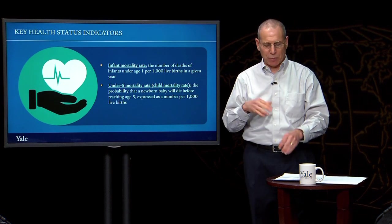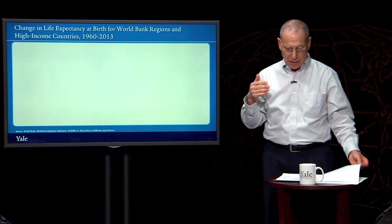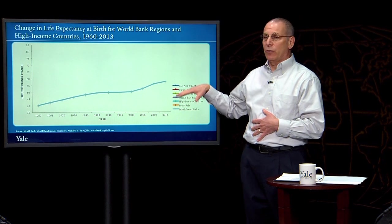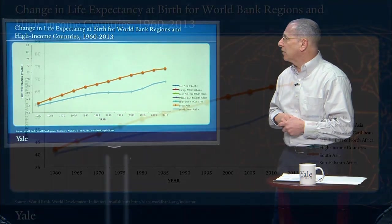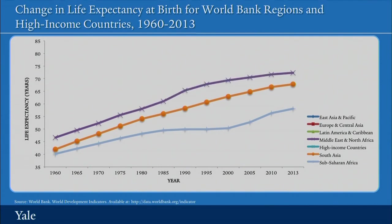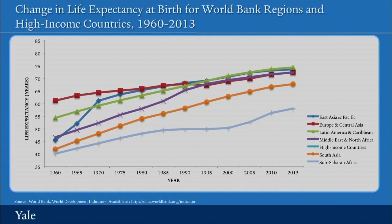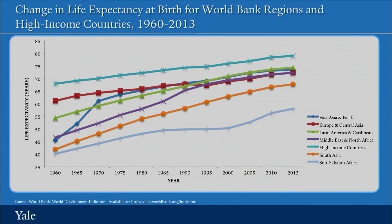Now that we have a better sense of these health indicators, let's look at how they play out for different World Bank regions. Here we see changes in life expectancy at birth by World Bank region and high-income countries over 1960 to 2013. Rachel, what messages should we take away? From 1960 to 2013 there has been a significant increase in life expectancy globally, but there is still a huge gap between high-income countries and lower-income regions, especially sub-Saharan Africa.